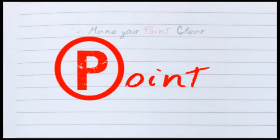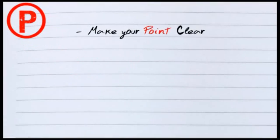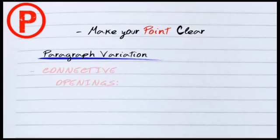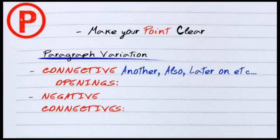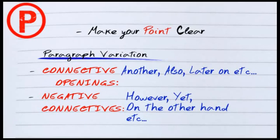First of all, if I make my point, I need to make sure I have some connecting opening. So I might want to say 'another', 'also', 'later on' — these are simple paragraph opening variations that are going to get me marks. If I'm talking about the opposite of the previous paragraph, I can put 'however', 'yet', 'on the other hand' — these are my negative connectives, which means I'm changing the topic sentence. Starting a paragraph with these shows paragraph control.